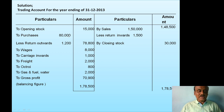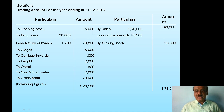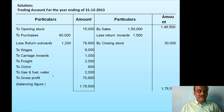Less purchase returns — return outwards — 1,200. So net purchases: 80,000 minus 1,200 equals 78,800. On the credit side, sales: 1,50,000. Less sales returns: 1,500. Net sales in the outer column: 1,48,500. Next on the debit side: wages 8,000; carriage inwards 1,000; freight 2,000; gas, fuel and water 2,000.